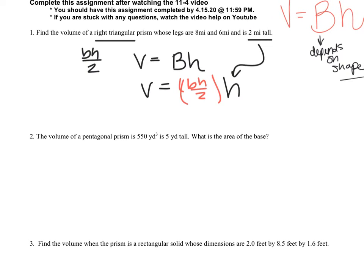Number 2 says the volume of a pentagonal prism is 550 yards cubed and it's 5 yards tall. We want to find the area of the base. If you go back to the video lesson, this is just like our final example. Volume equals Bh, we just do some substitutions. 550 goes here, the 5 goes here, and we solve for B.